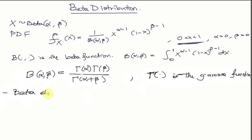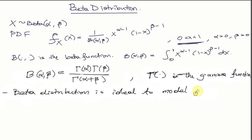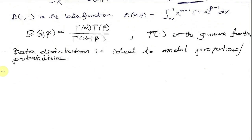A beta random variable is typically used to model proportions and probabilities. For instance, if you want to model the three-point shooting percentage of your favorite basketball player, the beta distribution may be an ideal distribution to use.